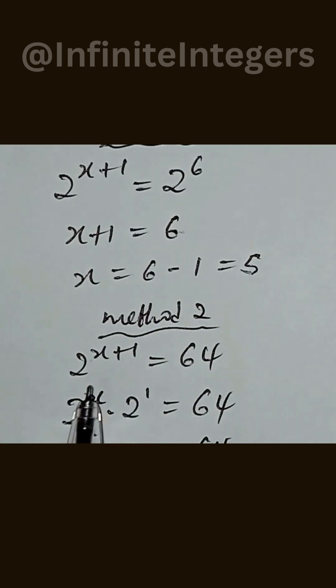For the second method, we have 2 to the power of x plus 1 equal to 64. So we can split this considering the identity of exponents. So 2 to the power of x multiplied by 2 to the power of 1 equals 64.